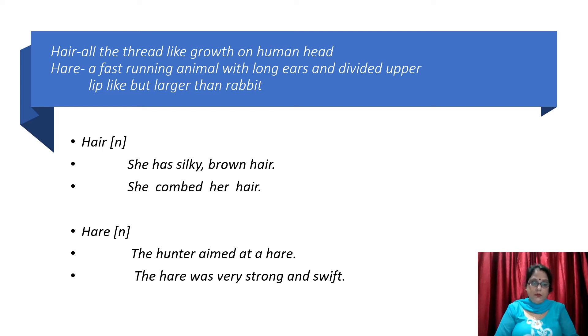Yeh dono noun hai. Let's use them in sentences. She has silky brown hair. Iske baal kaise hai? Silky aur brown. She combed her hair.